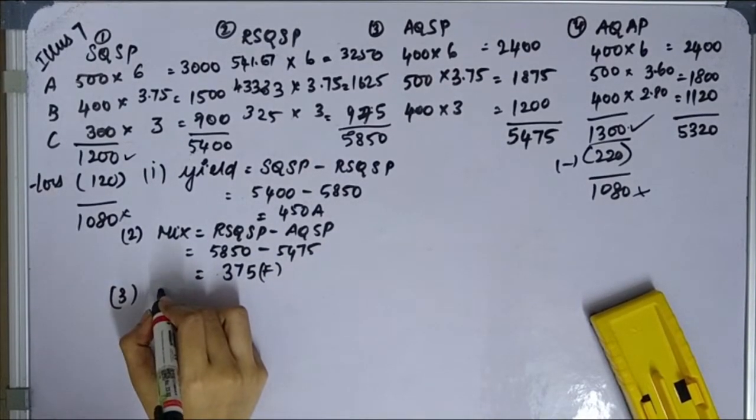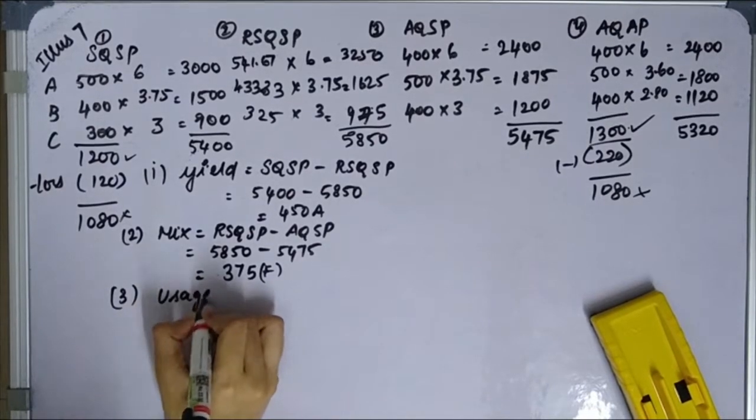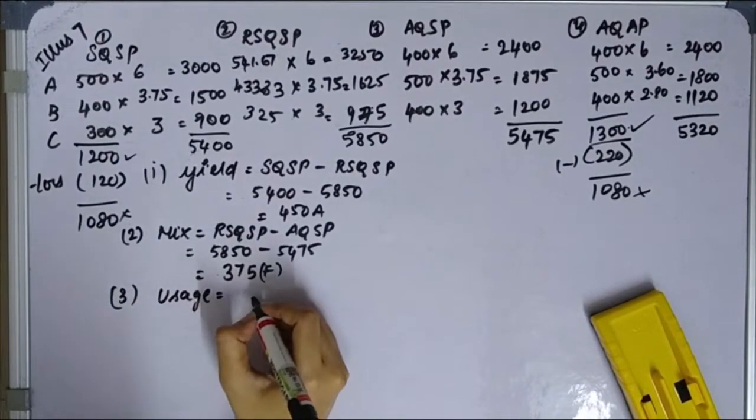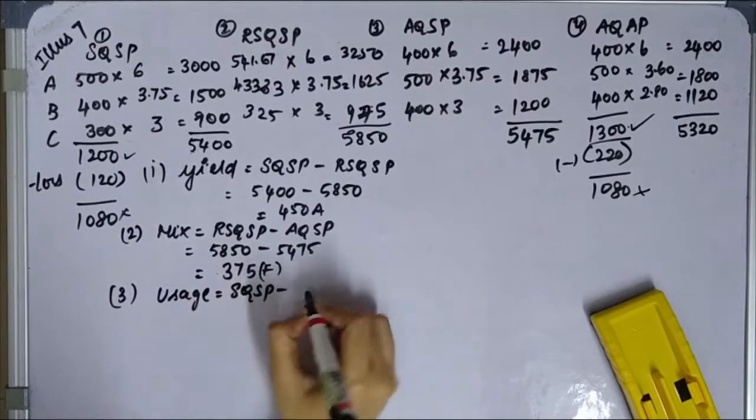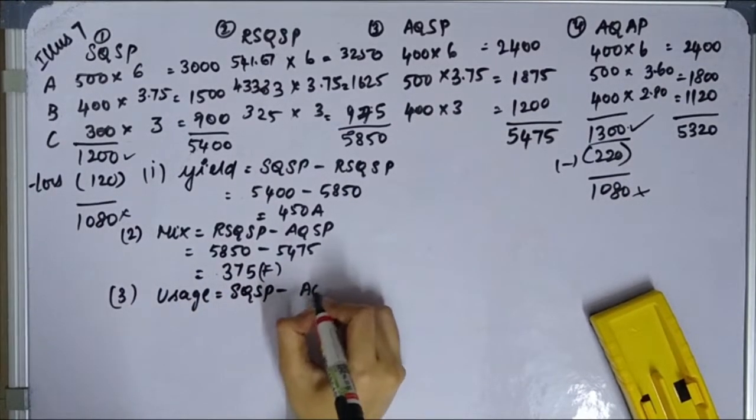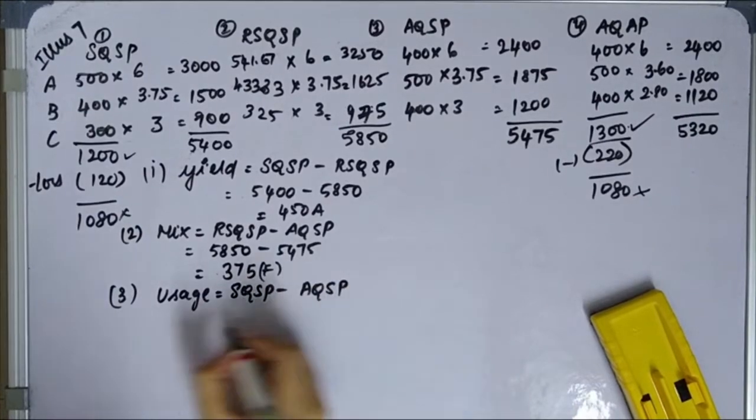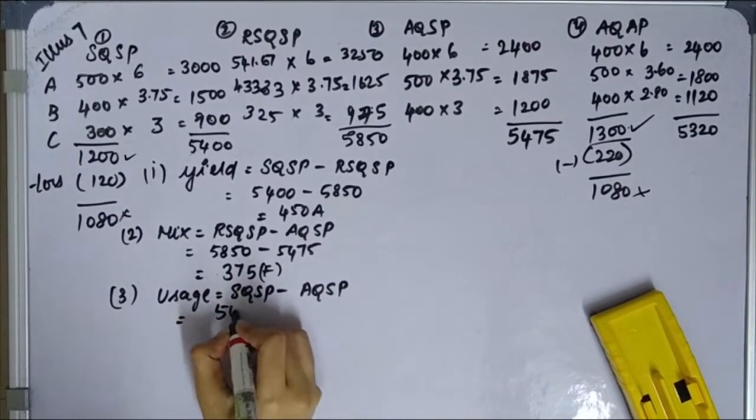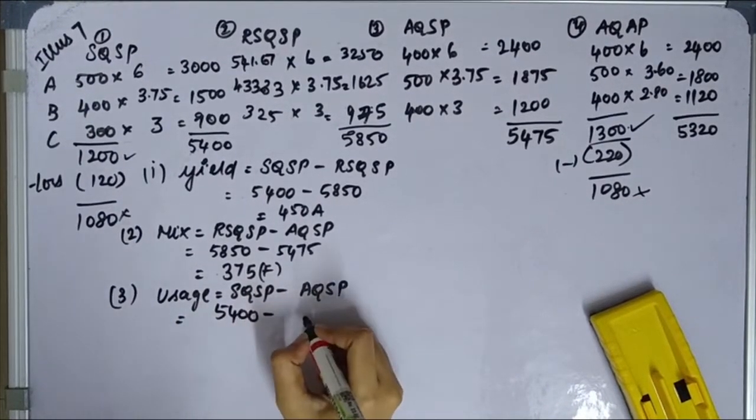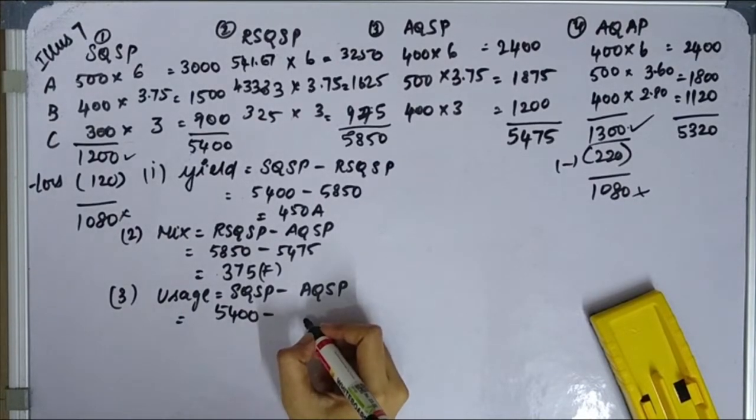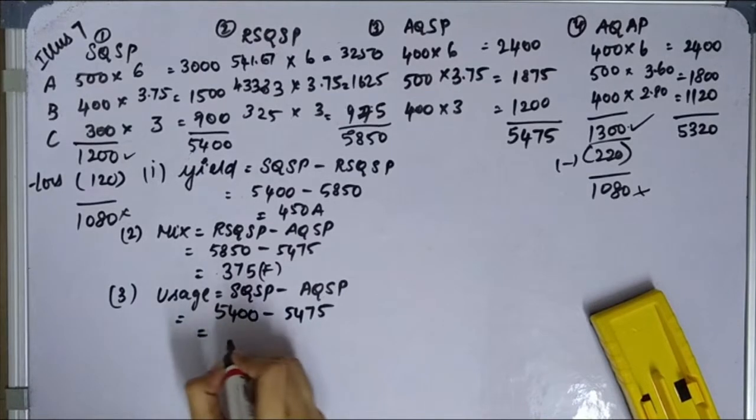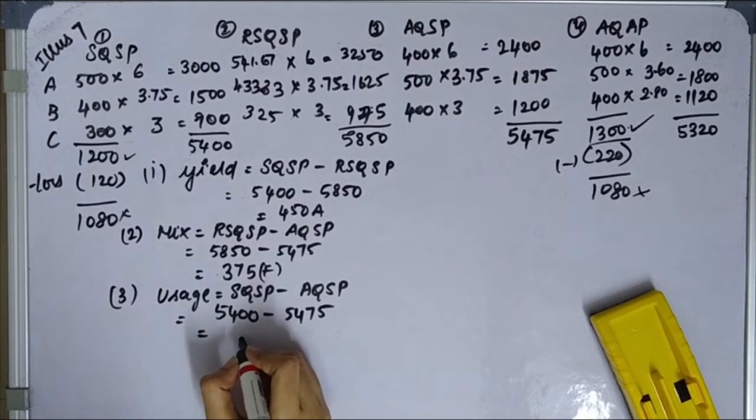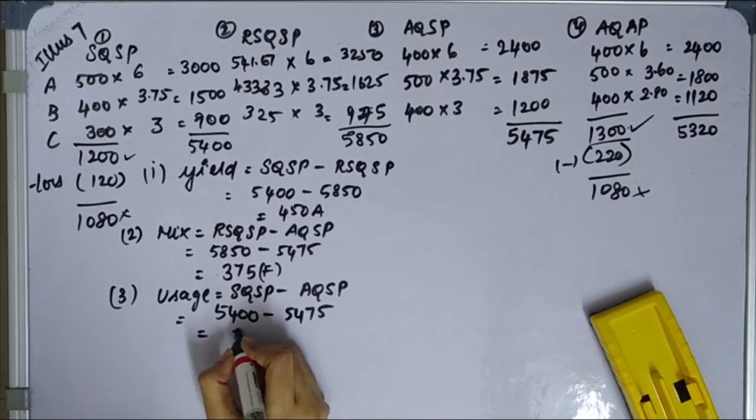Next, third one is Usage, Material Usage Variance. Material Usage Variance formula is SQ SP minus AQ SP. SQ SP is 5,400 minus AQ SP is 5,475. 75 adverse. Usage 75.